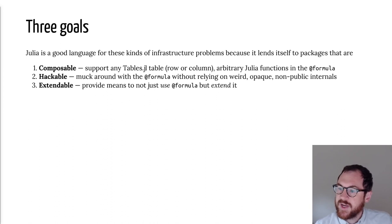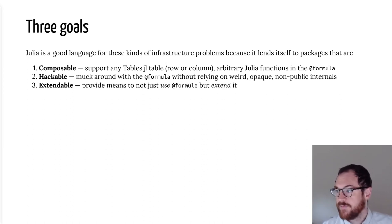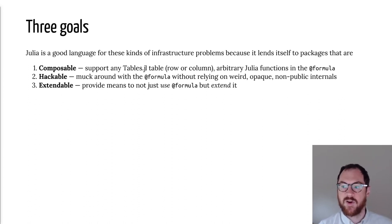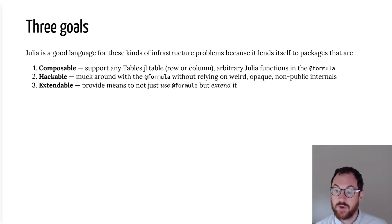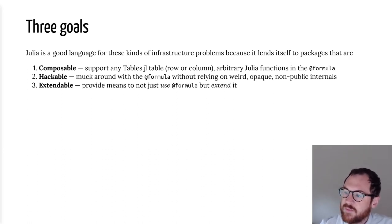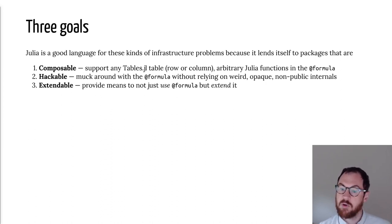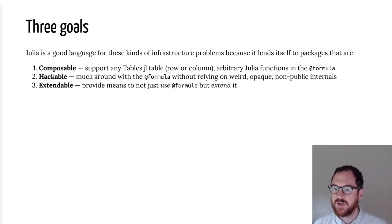Composability means supporting any Tables.jl table — either a row table or column table — and supporting arbitrary Julia functions in the formula call. For example, you can call log on a variable inside a formula and it will log-transform that variable. Hackability means you can manipulate the structure that a formula macro returns without relying on opaque or non-public internals, so that internal changes to the package won't break everybody else's code. Extendability means providing a way for users not just to use the formula, but to build more specialized table-to-matrix transformations useful for computational modeling beyond basic OLS.